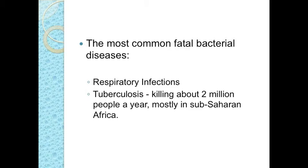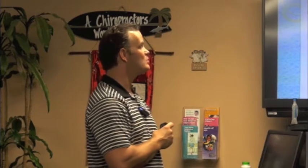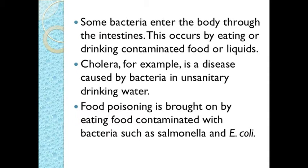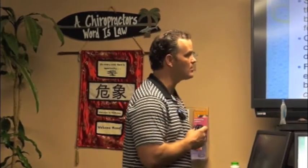The most common fatal bacterial diseases are respiratory infections — tuberculosis is one of these and kills about 2 million people a year in Sub-Saharan Africa. Some bacteria enter the body through the intestines by eating or drinking contaminated food. Cholera is an example from contaminated drinking water. Food poisoning is brought on by eating food contaminated with salmonella or E. coli.